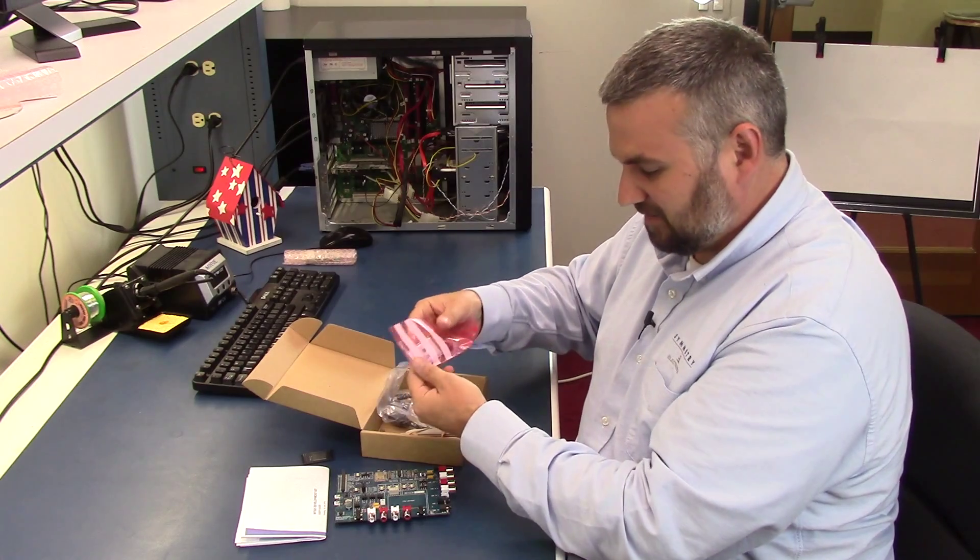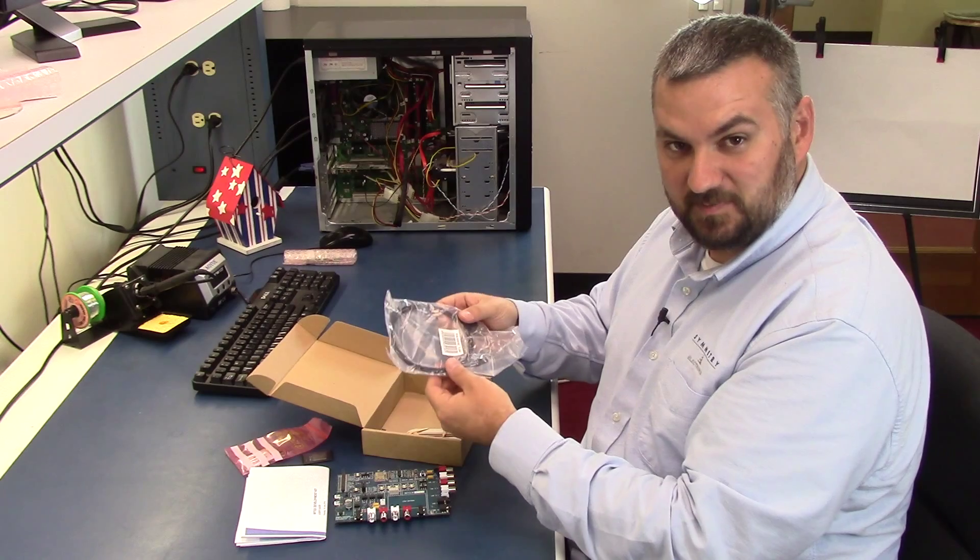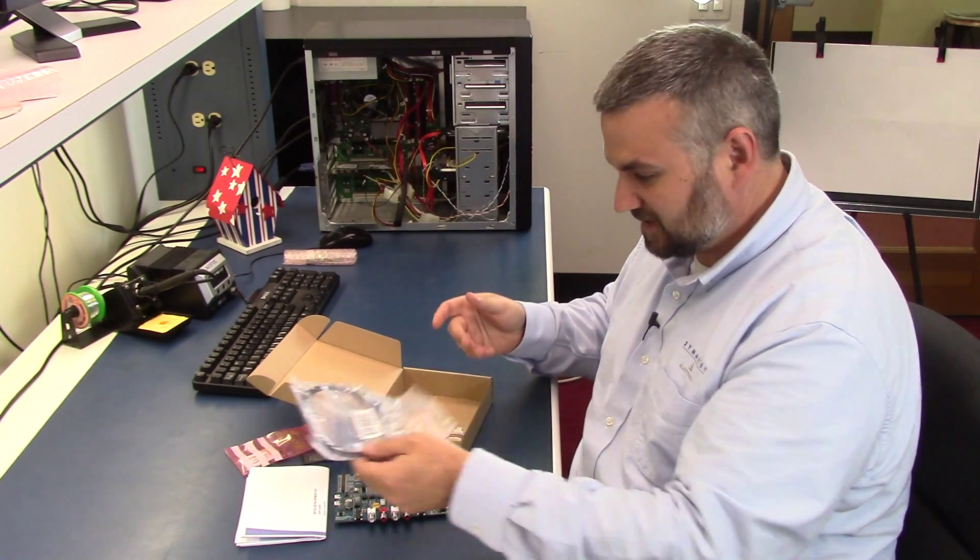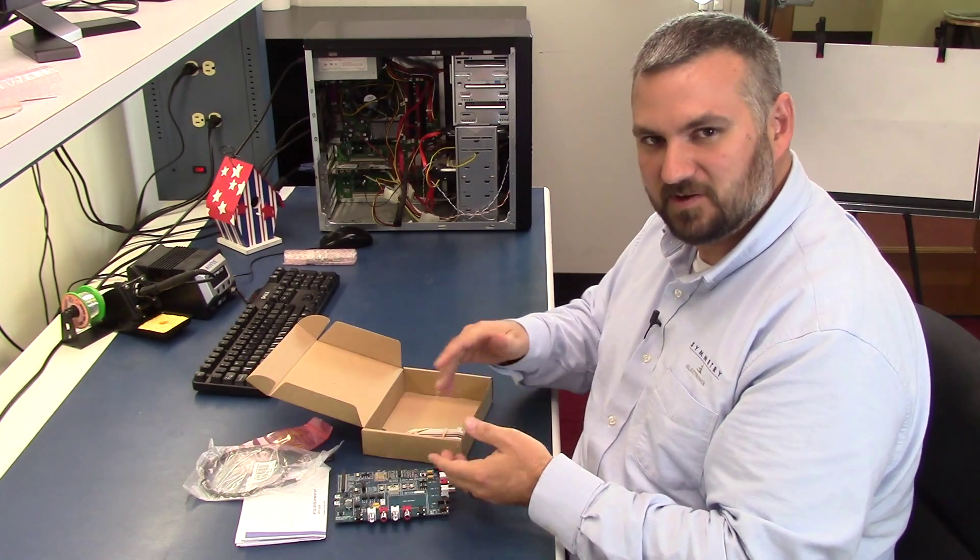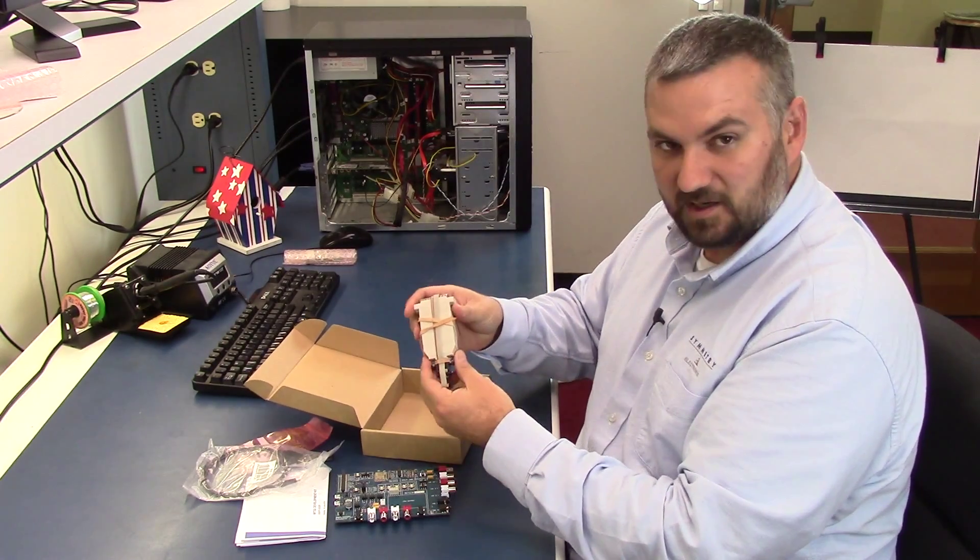Then they give you a lithium ion battery because this can run off of battery power or an external power supply. A USB cable because it can also be powered via USB, and if you use terminal software you can interface with the board via the USB cable. And then there's a programming adapter.